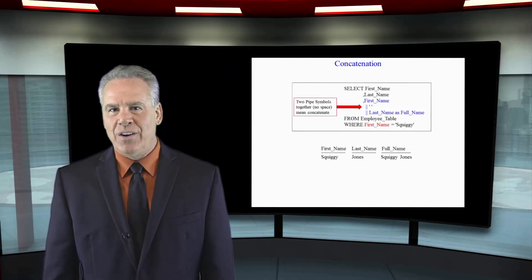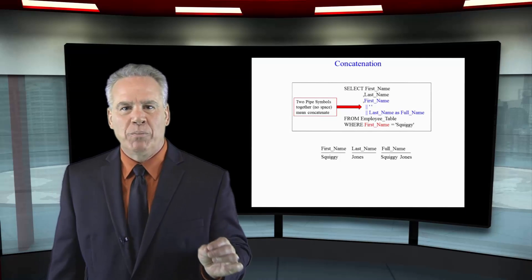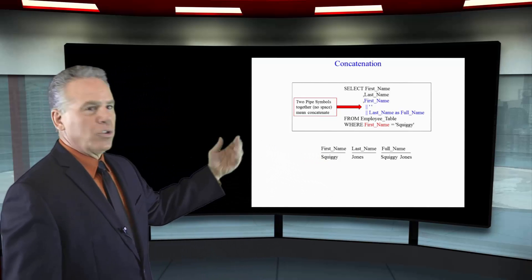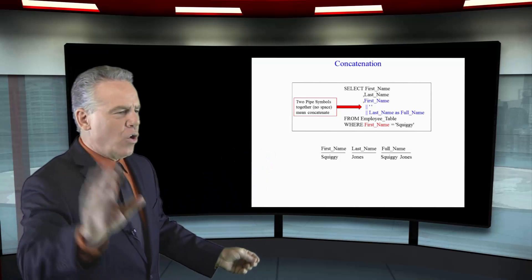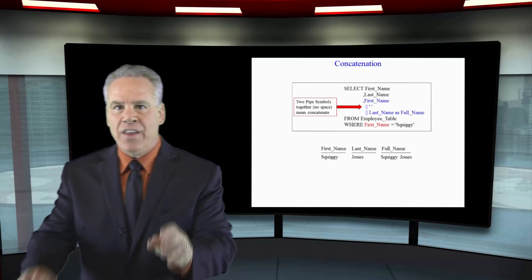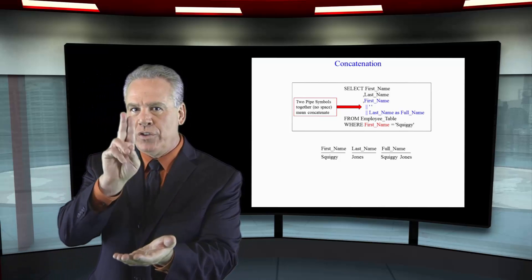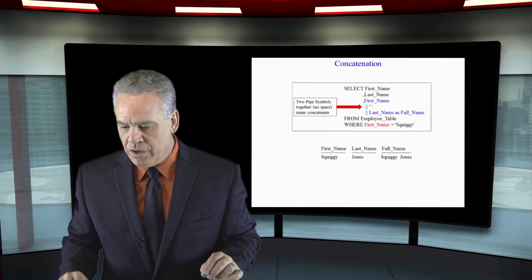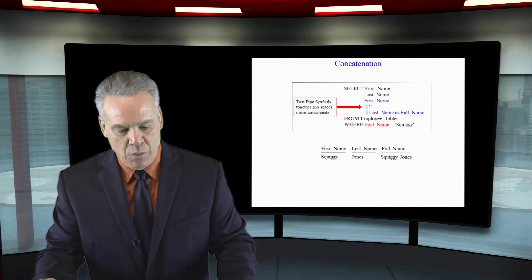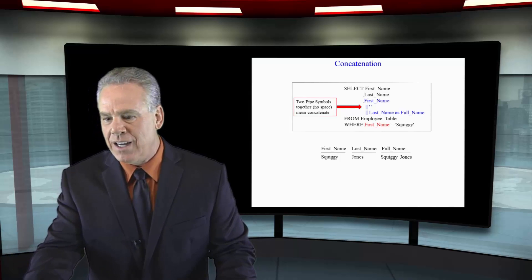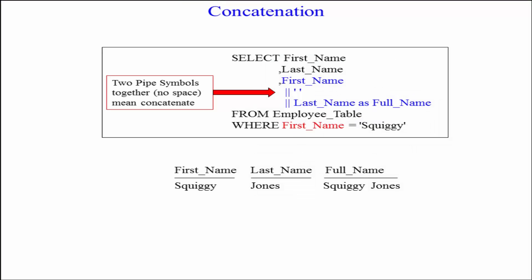We're going to use concatenation here to concatenate multiple columns together. So we'll select the first name, then we'll select the last name. Then notice in blue we're going to select the first name and then I will concatenate with two pipe symbols. Look on your keyboard and notice just above the enter key, if you were to hold the shift key down and go pipe, pipe, just above that enter key, that's the double pipe symbol.